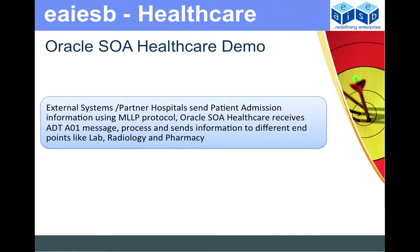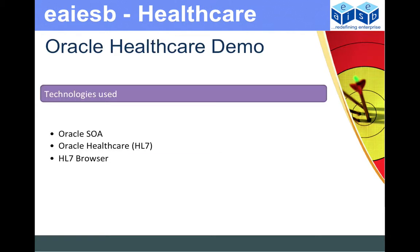Variety SOA Healthcare receives the ADT A01 message, processes it, and sends the information to different endpoints like lab, radiology, and pharmacy. The technologies used for this demo are Oracle SOA, Oracle Healthcare, HL7, and the HL7 browser.